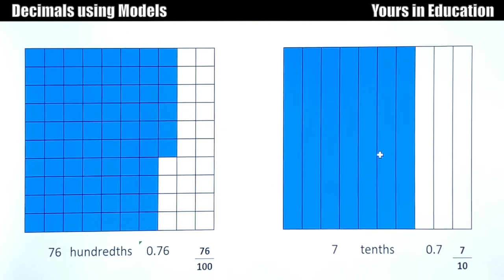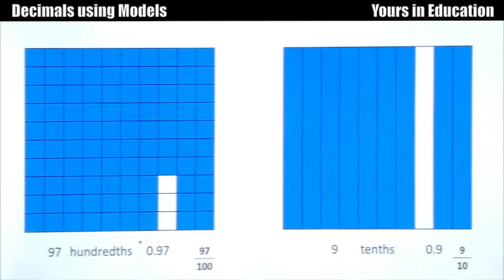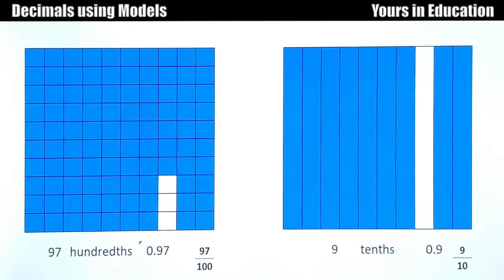Seven are shaded, which means that it's 7 tenths, 0.7, and numerator 7, denominator 10 as a fraction. We're almost done filling out the wholes. And on the left side we have 97 hundredths. It's very easy to identify that because we only have 3 more left to get to one complete whole. And on the right side we have 9 tenths. You don't even need to count them because you know that 9 plus 1 is 10 tenths.